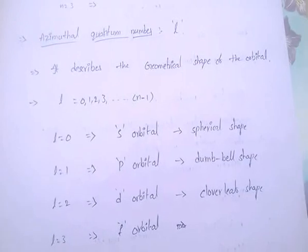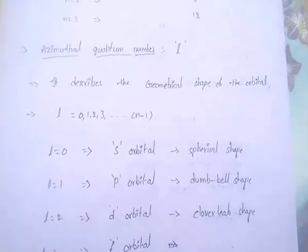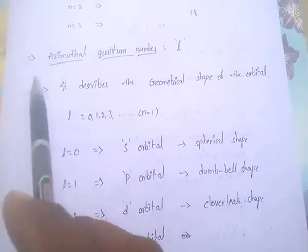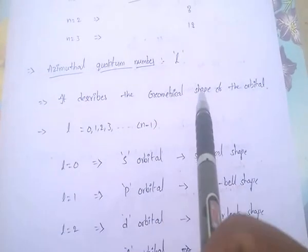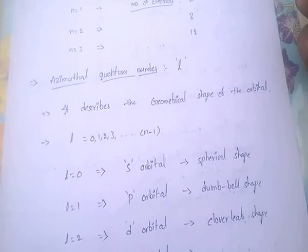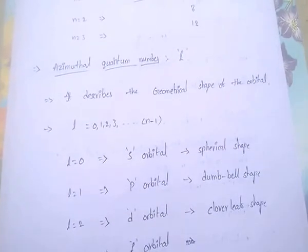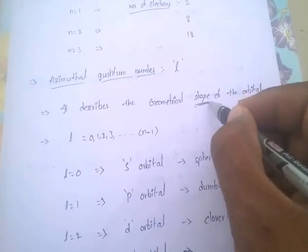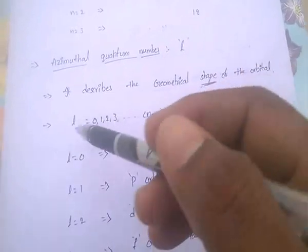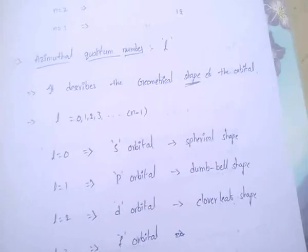Next, Azimuthal Quantum Number. It is denoted by the letter small l. This Azimuthal quantum number describes the geometric shape of the orbital. While the principal quantum number describes the size of the orbital, the Azimuthal quantum number describes the shape of the orbital. The l values range from 0 to n minus 1.